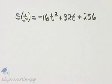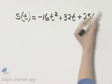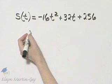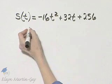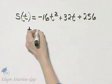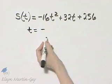To find the maximum height, let's find the vertex of this quadratic function. Remember the X value, in this case the T value, we find that by negative B over 2A.